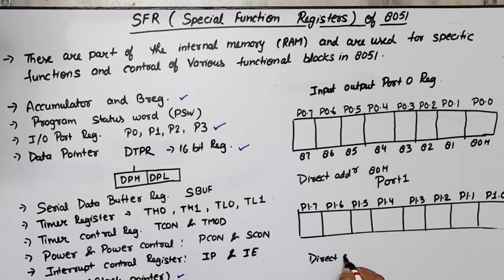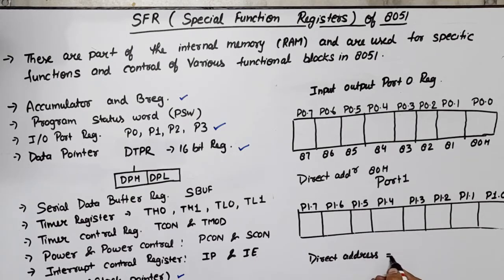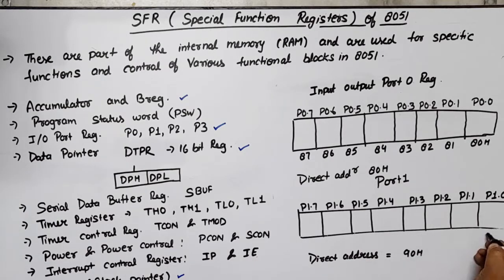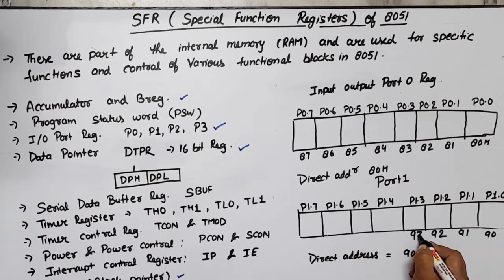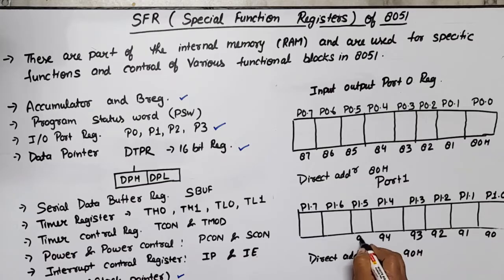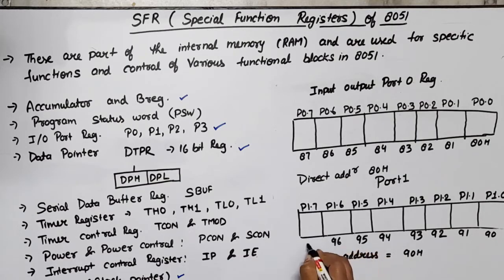The bit-wise addresses for Port 1 are 90, 91, 92, 93, 94, 95, 96, and 97.